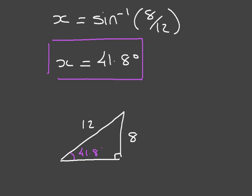And there you go. We've just learned how to find unknown angles using right-angle trigonometry.